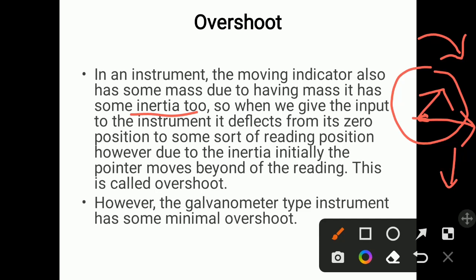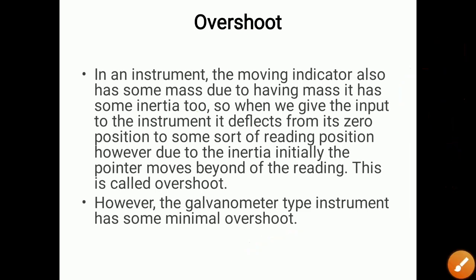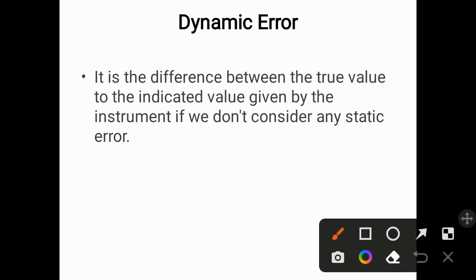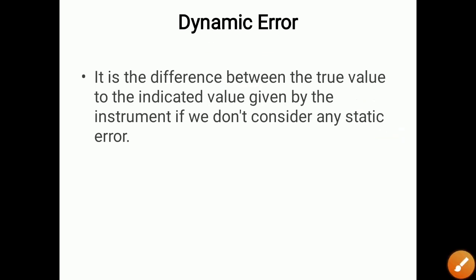Galvanometer type instruments have minimal overshoot because of the less weight of their indicators. Dynamic error is again defined as the difference between the true value and the indicated value given by the instrument, not considering any static error. We consider here only dynamic values — those changing with respect to time. That difference is called dynamic error.